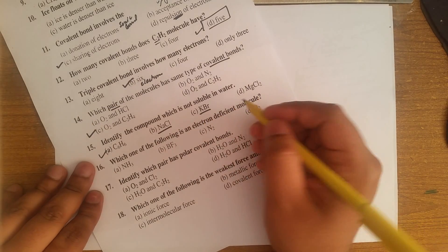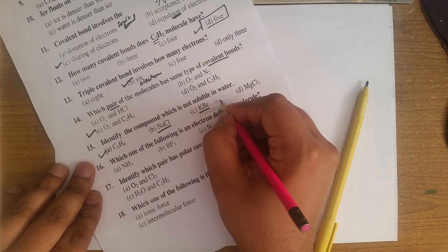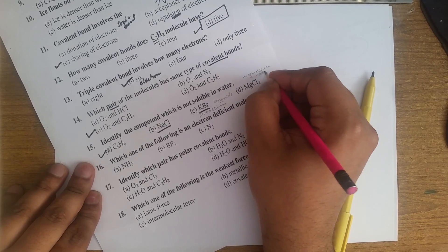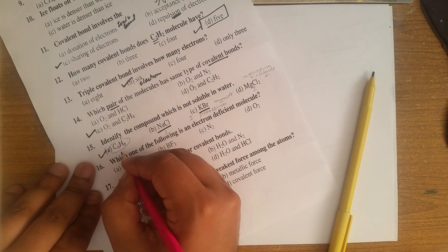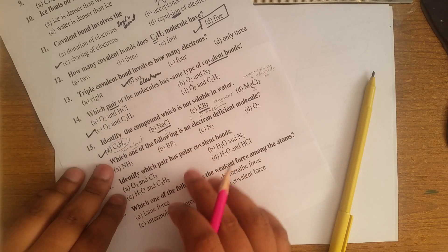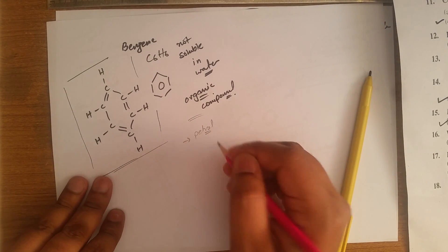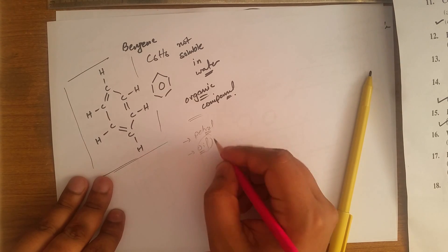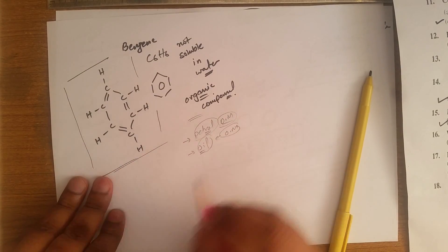NaCl is an ionic compound, potassium bromide is also ionic, and magnesium chloride is also ionic. Organic/covalent compounds are usually not soluble in water. You may not have seen benzene, but you have seen petrol — petrol is also not soluble in water. Similarly, oil floats on water in salad dressing because oil is an organic molecule, just like petrol.